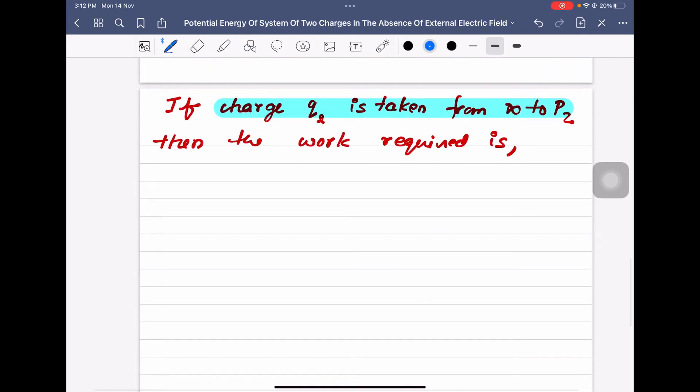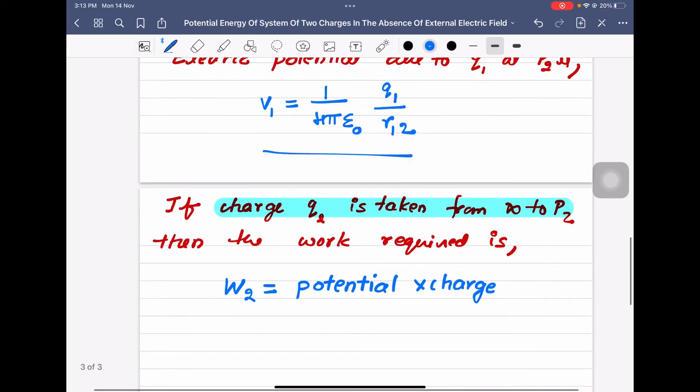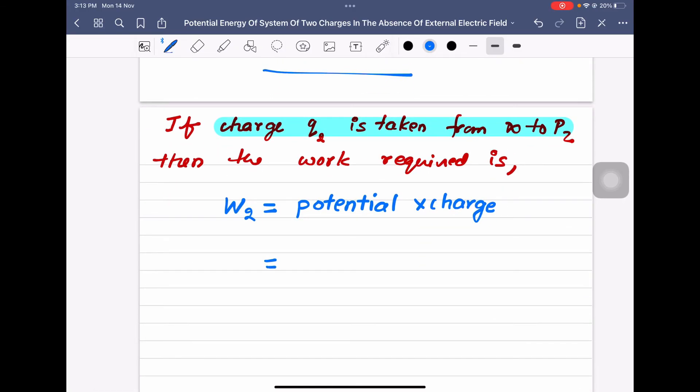So therefore, that work done is equal to W2 is equal to potential into charge or charge into potential, potential multiplied by charge. What is the potential at that point? We have written already V1, potential equal to V1, V1 into which charge we are bringing, we are bringing Q2.